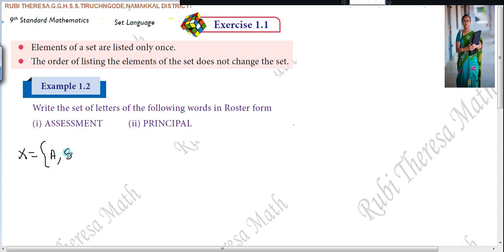comma. S. Is it necessary to write S one more time? No. You have given elements of your set are listed only once. You have to write only one time. Next, what is the element you have to write? E. Next, S is given. Is it necessary to write? You should not write because already S is there. Listed only once. Next one, what? M.